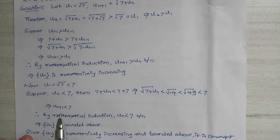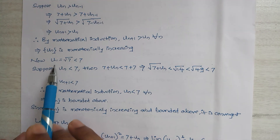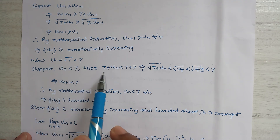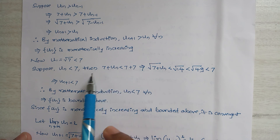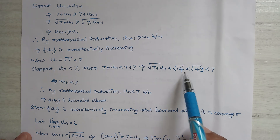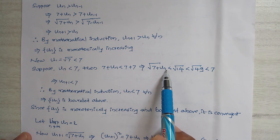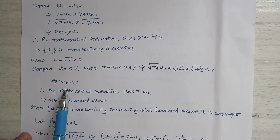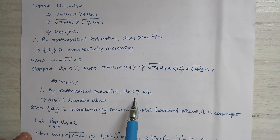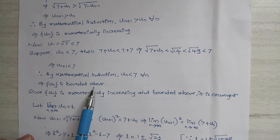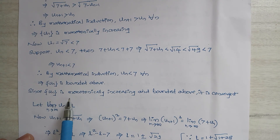Now u1 = √7 < 7. Suppose un < 7; adding 7 to both sides gives 7 + un < 14, so √(7 + un) < √14. Since √14 < 7 (as 14 < 49), we have un+1 < 7. Therefore by mathematical induction, un < 7 for all n, so un is bounded above.